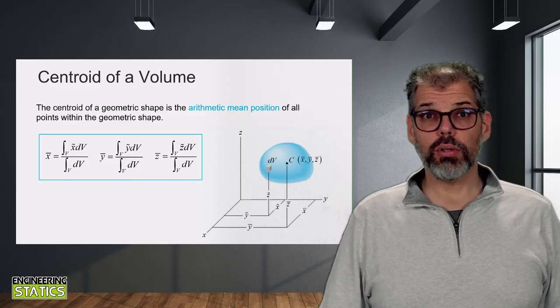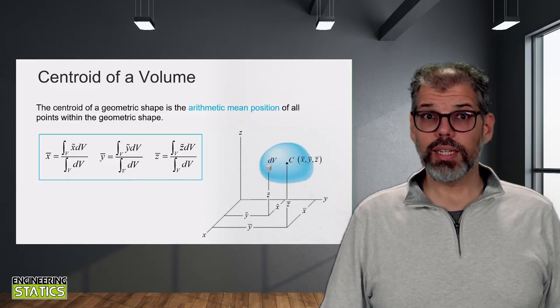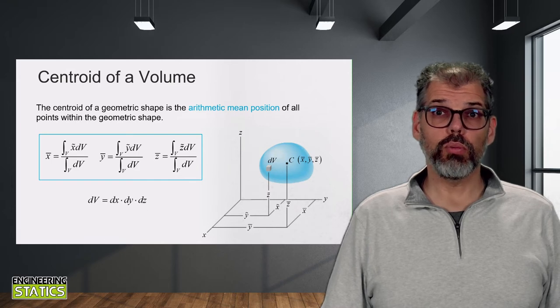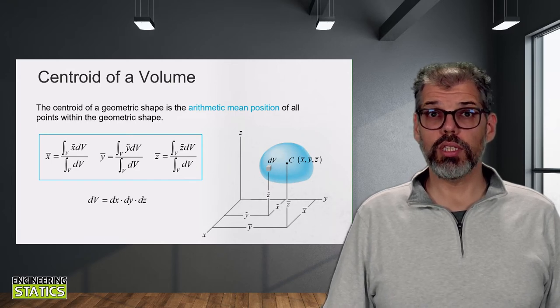As with area, this integral is not a single integral, but in this case it would be a triple integral, as the volume dV would be equal to dx times dy times dz. So we are done then, right? We know how to reduce a body to a single point by replacing it by its centroid, and we can move on.